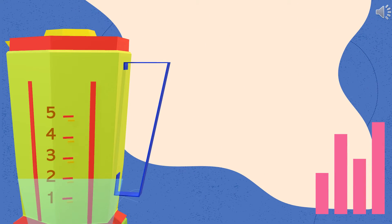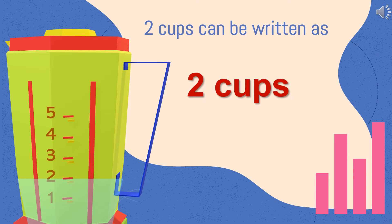You can write cups in a few ways. Two cups can either be written out as two cups, like this, or two C. The C would be an abbreviation for cups.